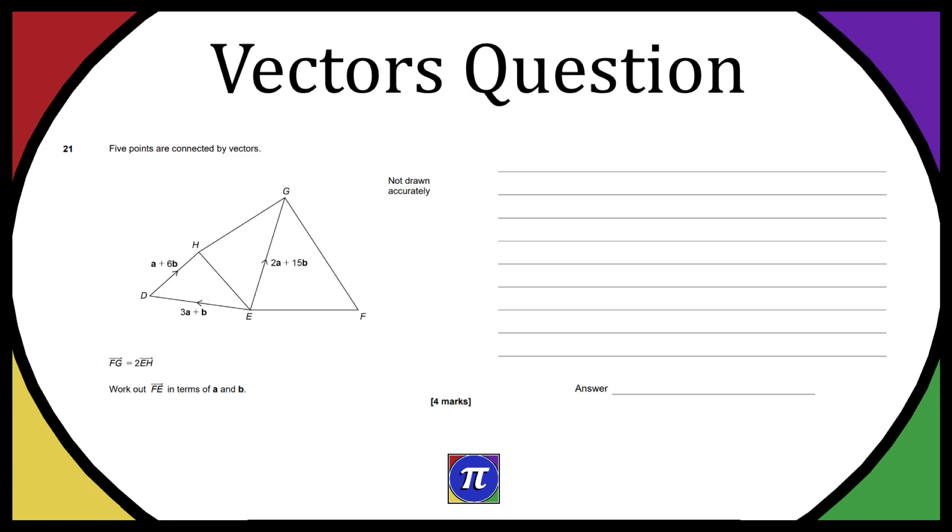So the unknown I want to work out right now is F to G and one line up in the question, they stated F to G is actually equal to 2EH and we can work out E to H because we know E to D and D to H. So if we wanted to travel from E to H, we know the equivalent would be going from E to D and then D to H.